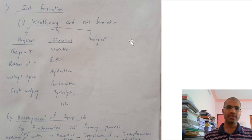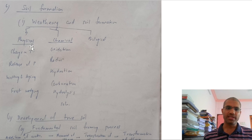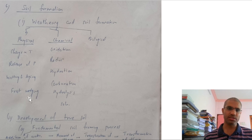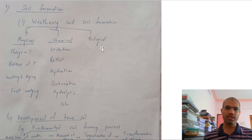Soil formation begins with weathering, divided into three types. Physical weathering includes changes in temperature, pressure, wetting and drying, and frost wedging. Chemical weathering includes oxidation, reduction, hydration, carbonation, and hydrolysis. Biological weathering involves plants and organisms playing an important role in soil formation.